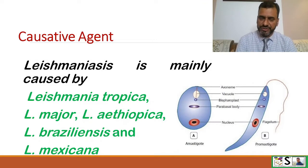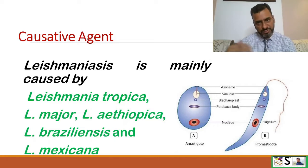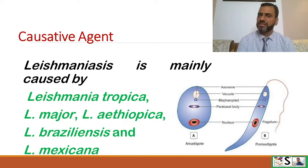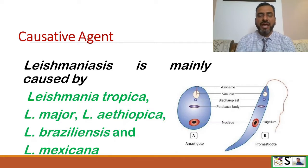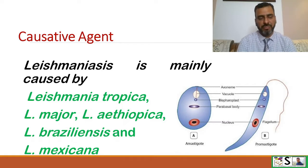What is the causative agent for Leishmaniasis? Leishmaniasis is mainly caused by some species of Leishmania, which includes Leishmania tropica, Leishmania major, Leishmania aethiopica, Leishmania braziliensis, and Leishmania mexicana.